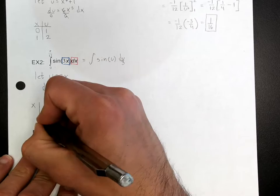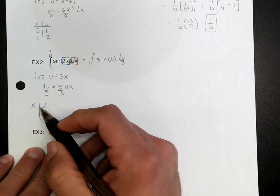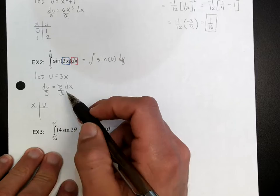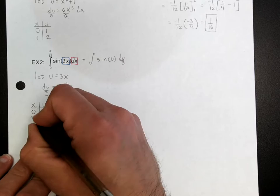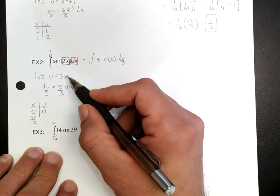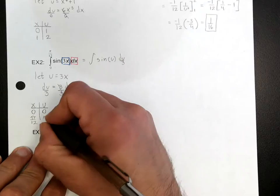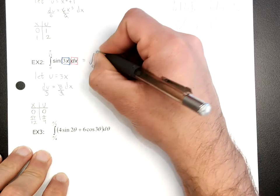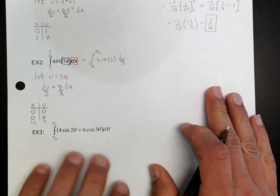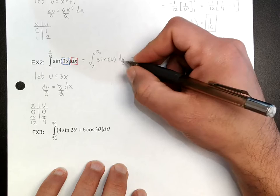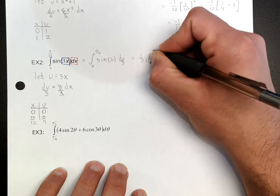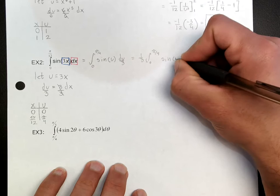To write our boundaries, remember we have to replace them using the relationship between x and u. If x is 0, I plug in 0 and u is 0. If x is pi over 12, then 3 times pi over 12 gives pi over 4. So my new boundaries are 0 and pi over 4. Pulling out the one-third, we have one-third times the integral from 0 to pi over 4 of sine(u) du.